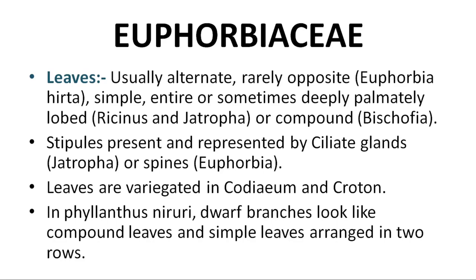Leaves are variegated in Codiaeum and Croton. In Phyllanthus niruri, dwarf branches look like compound leaves, with simple leaves arranged in two rows — but these are branches, not compound leaves.